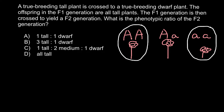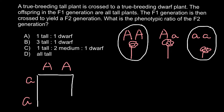So what we know is that we cross a true breeding tall plant with a true breeding dwarf plant. One parent is going to be homozygous dominant and another parent is going to be homozygous recessive. This is the parental generation, and this is going to be the progeny which we call the F1 generation.